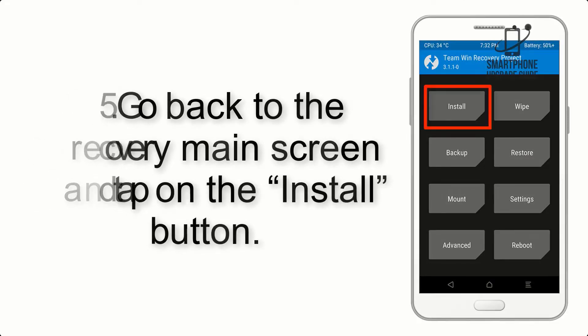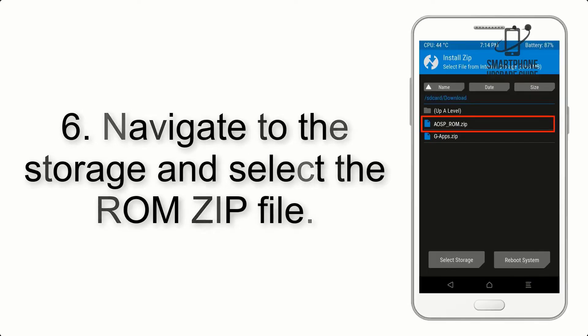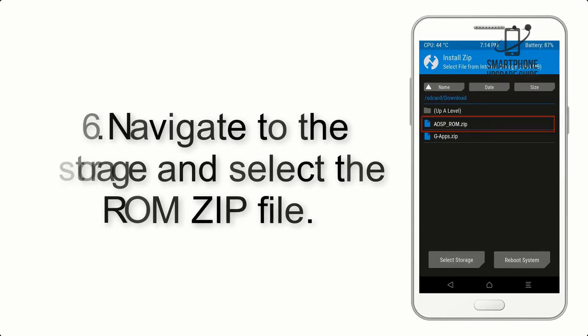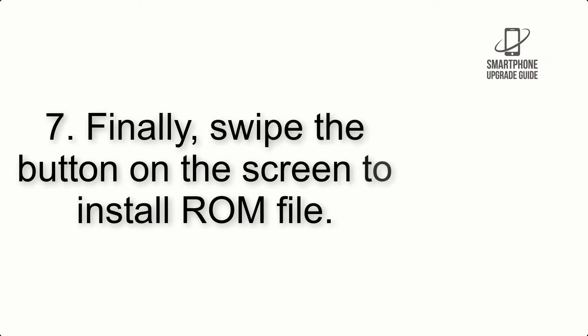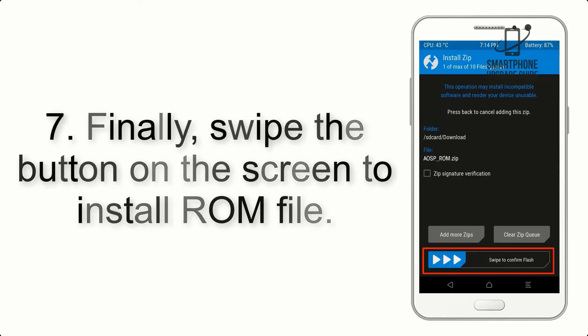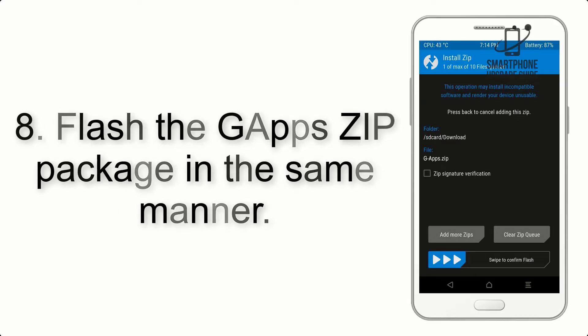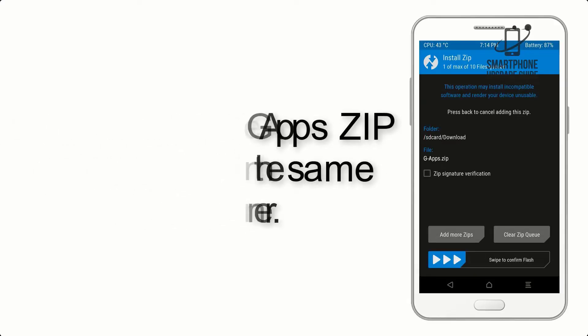Step 5: Go back to the recovery main screen and tap on the Install button. Step 6: Navigate to the storage and select the ROM zip file. Step 7: Finally, swipe the button on the screen to install the ROM file.